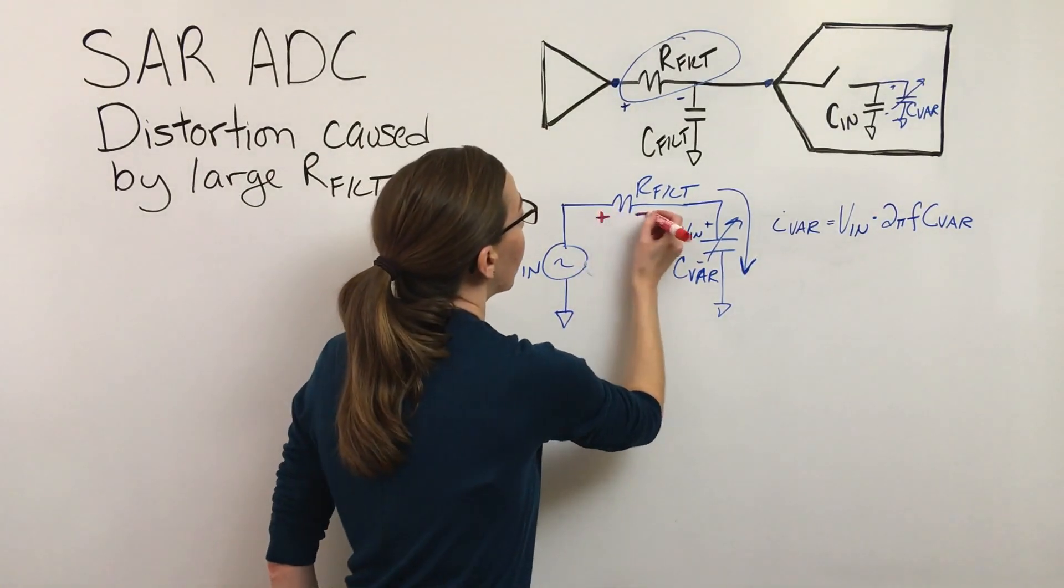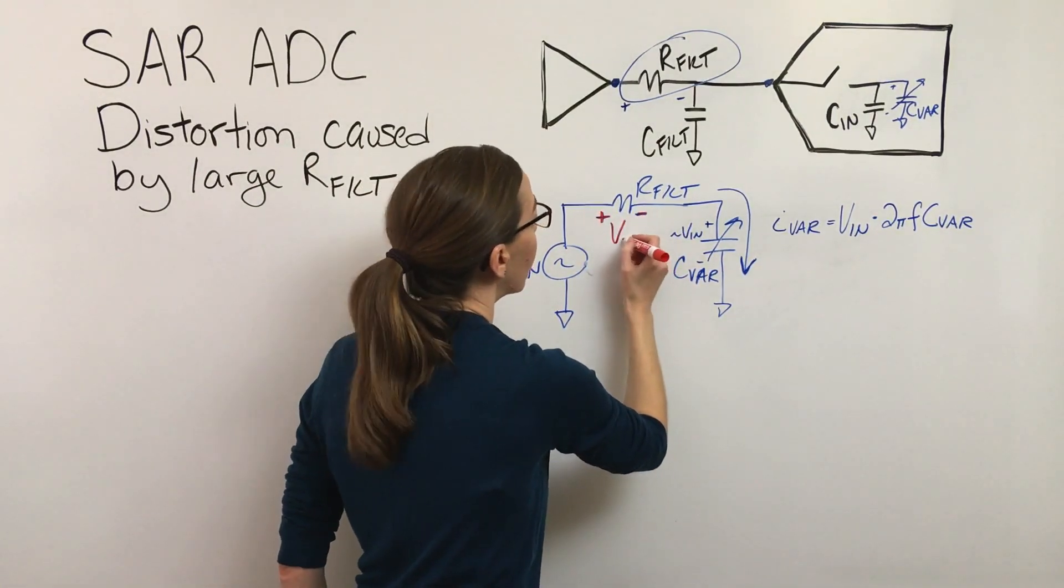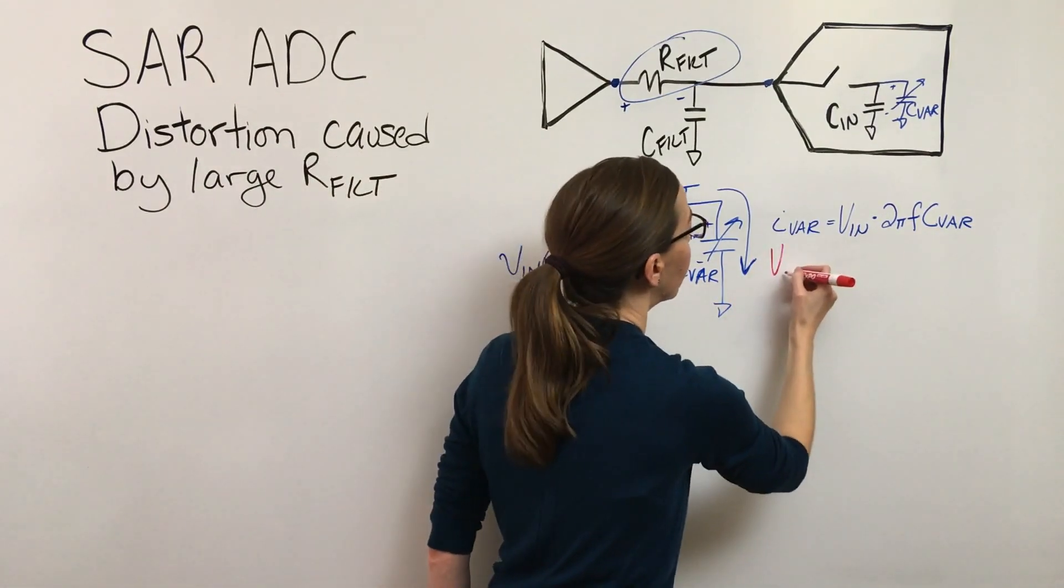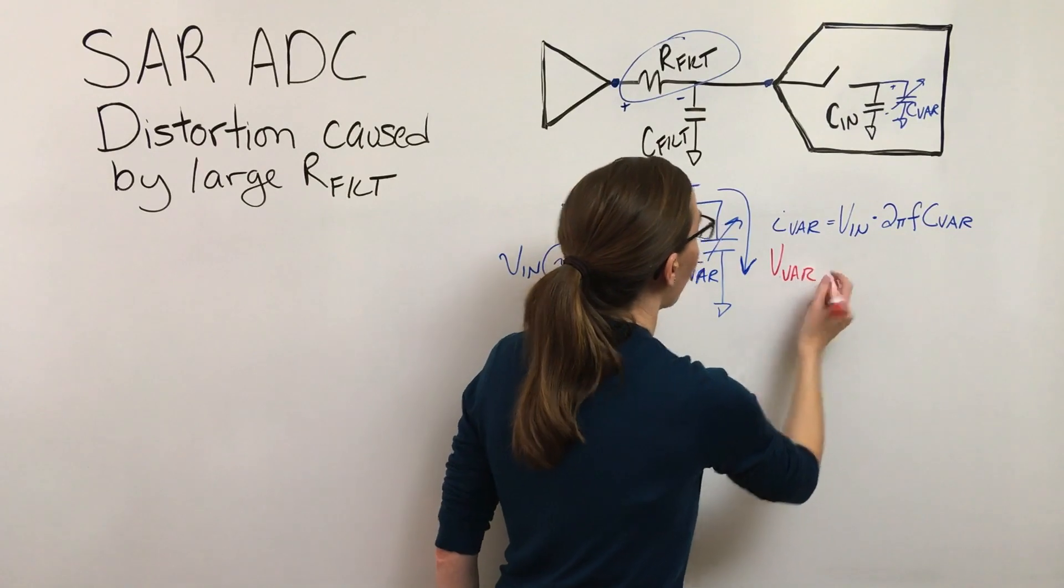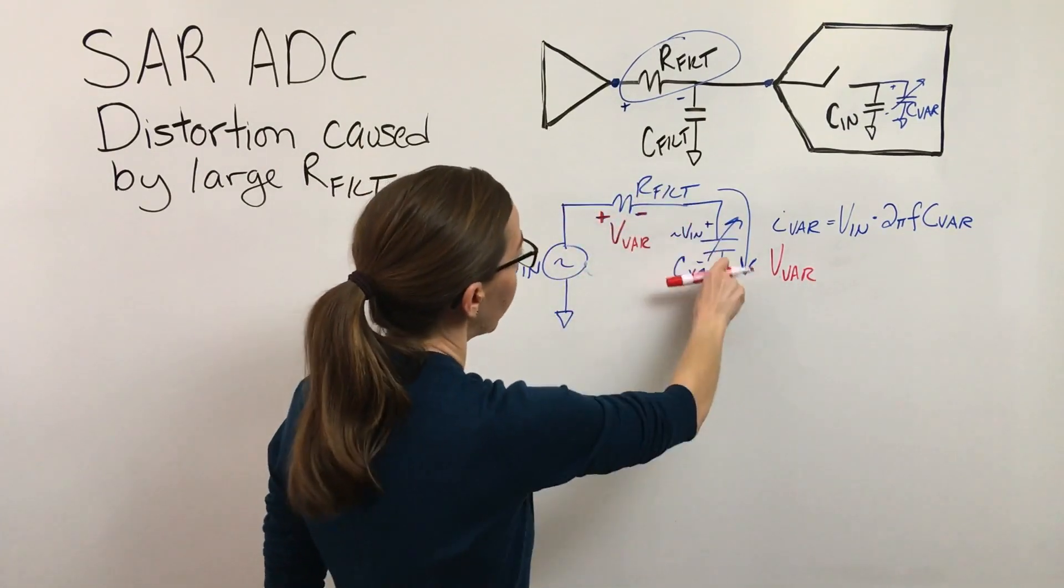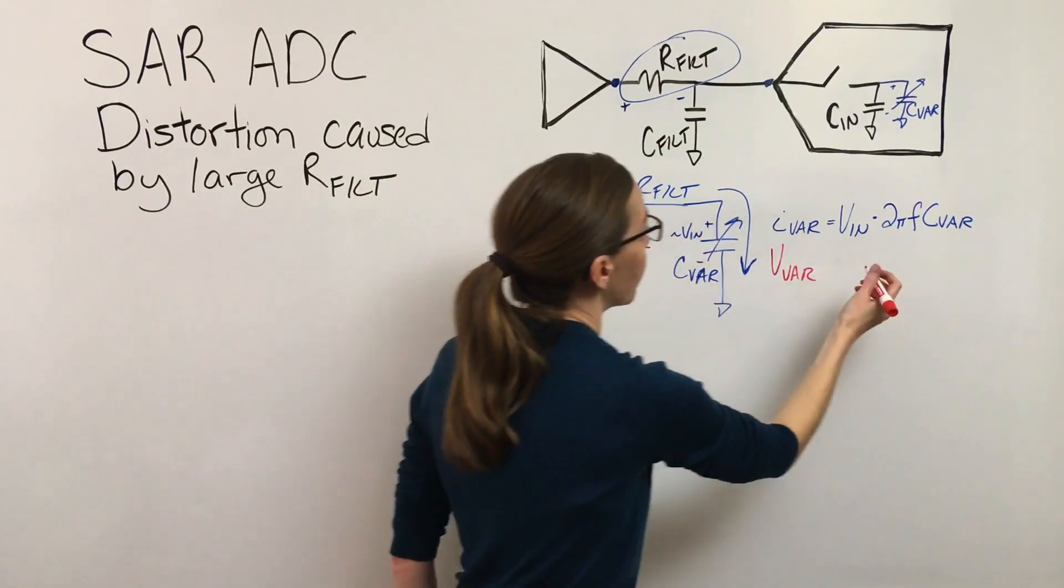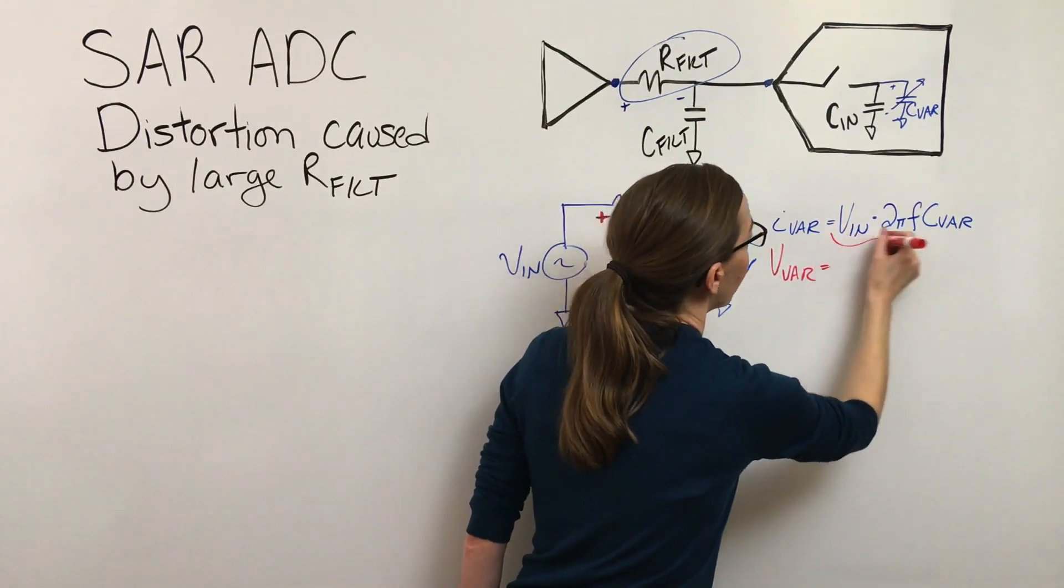So what we want to know is what is the voltage that's non-linear. And so that's just the current that's going through this RC times resistor.